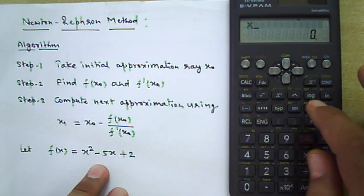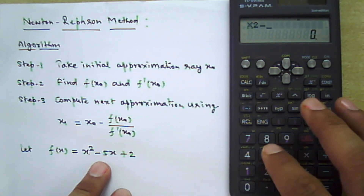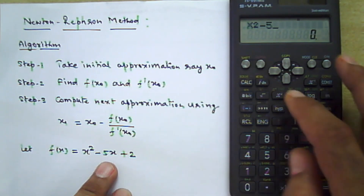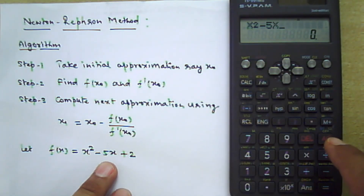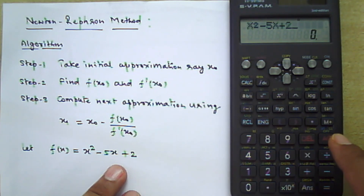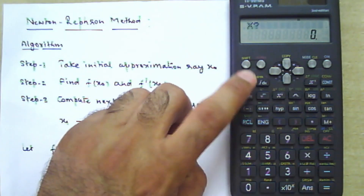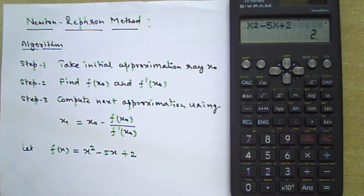To type the function, first press Alpha, then X, then X², then minus 5. For X, press Alpha again, then the closing bracket key — so you have x² - 5x + 2. To find the value at x = 0, press the Calculation button. It will ask for the value of x; enter 0, then press equals.